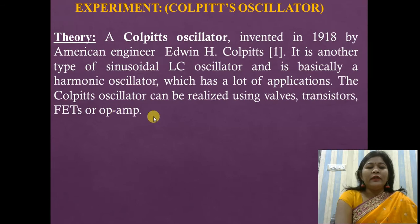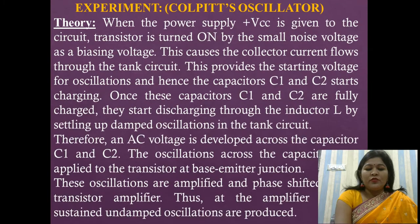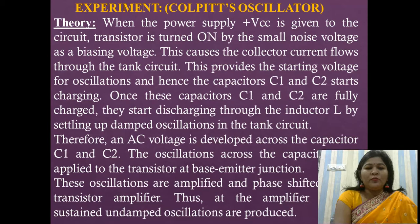You can design the Colpitt's oscillator using these active elements like transistor, FET, op-amp, etc., along with passive components like resistors and capacitors. Here we are going to perform this experiment using a transistor.